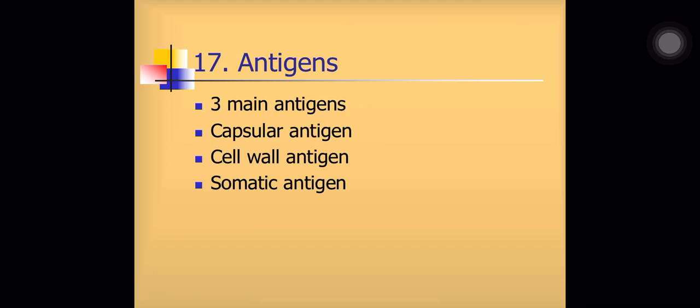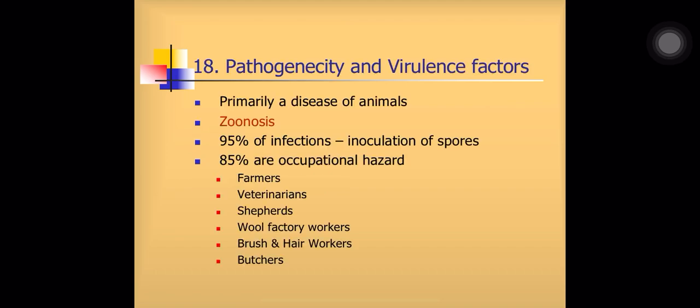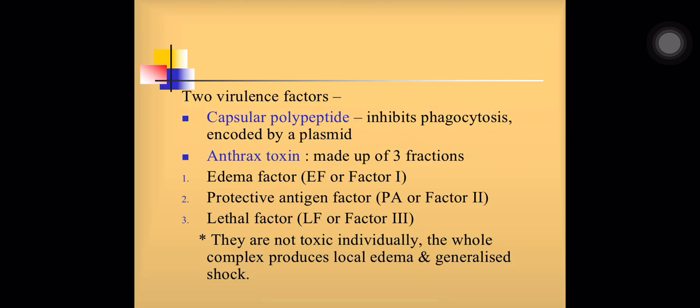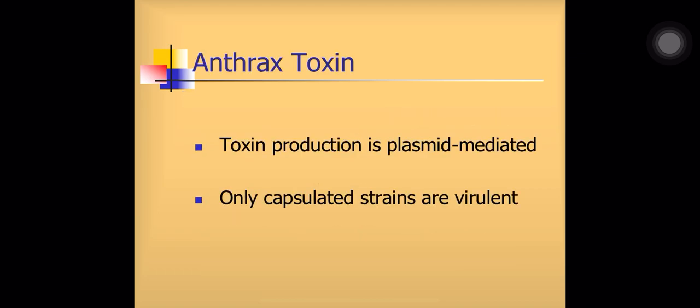There are three main antigens of Bacillus anthracis: the capsular antigen, the cell wall antigen, and the somatic antigen. Pathogenicity and virulence factors: Bacillus anthracis causes a zoonotic disease, with most infections occurring due to inoculation of spores, mainly among veterinary doctors, farmers, shepherds, and wool factory workers — making it an occupational hazard. Two virulence factors are known: the capsular polypeptide which protects against phagocytosis, and the anthrax toxin. The anthrax toxin has three portions — edema factor, protective antigen factor, and lethal factor — which individually are non-toxic but together cause edema, necrosis, and shock. Anthrax toxin production is plasmid-mediated, and only capsulated strains are virulent.